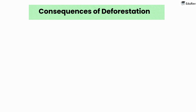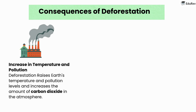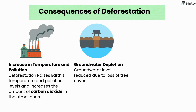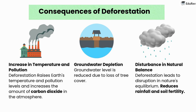Now let us see the consequences of deforestation. First, deforestation raises Earth's temperature and pollution levels, and increases the amount of carbon dioxide in the atmosphere. Second, groundwater level is reduced due to loss of tree cover. Third, deforestation leads to disruption in nature's equilibrium.